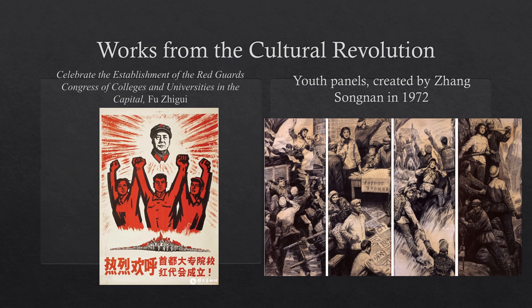To the right, you have the youth panels created by Zong Sungnin in 1972. And again, even though we don't have the red, we do have a lot of the elements seen in the work of the Cultural Revolution — very propagandic. You see the women, the female red youth, shouting and giving inspiration in the first and then third panels. You see a woman in the second panel and she's kind of advocating for what's going on.